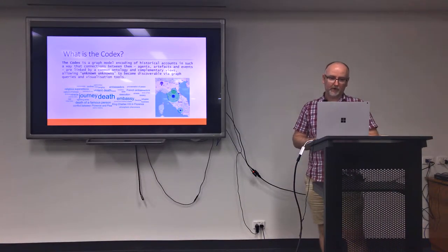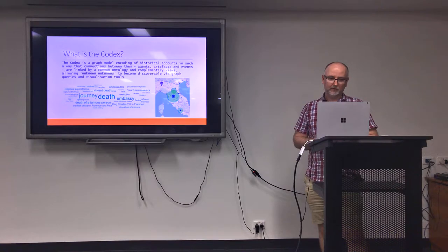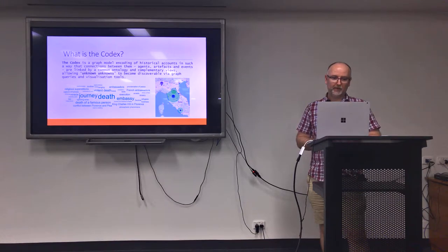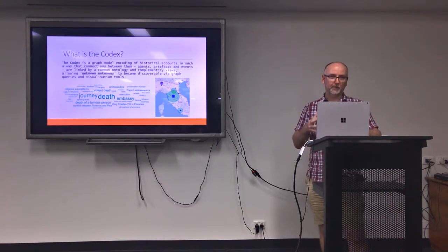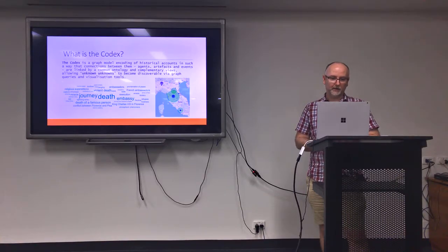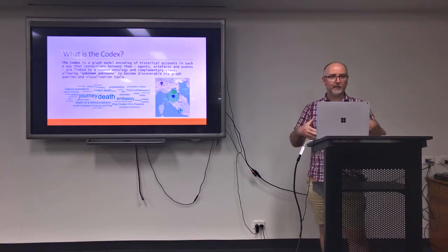We use a graph model to encode these events. We've broken up agents, artifacts, and events, and they are linked by a common ontology — a taxonomy. The idea is to try and identify the unknown unknowns between the documents we have, to try and understand the things that might not be obvious.